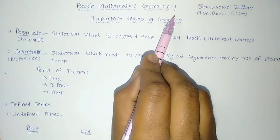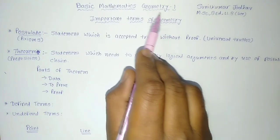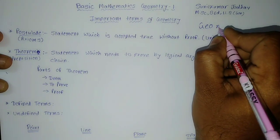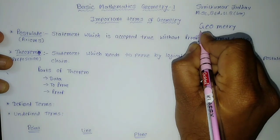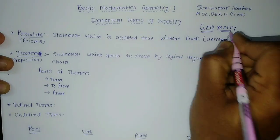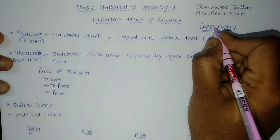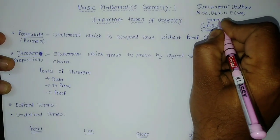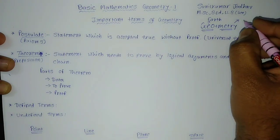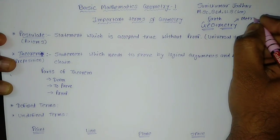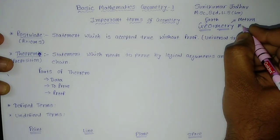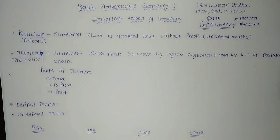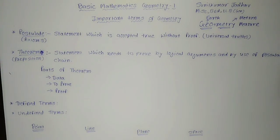Basic Mathematics Geometry part 1, let us begin. The term 'geometry' mainly has two words: geo and matri. Geo means earth, and the other word is matron, which means measure. So this term geometry comes from the measure of the earth — that is what geometry is.